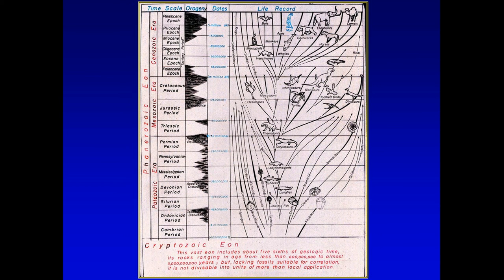The second thing I like is that five-sixths of the Earth's rock is the cryptozoic — no fossils at all. Everybody gets this idea that any sedimentary or limestone rock has fossils, but that's not true. Five-sixths of the Earth's rocks have none. This vast period, the Precambrian, lacks fossils suitable for correlation and can't even be divided into units without them.